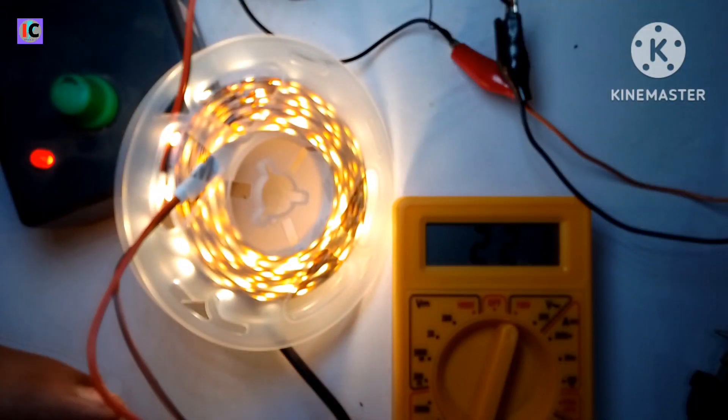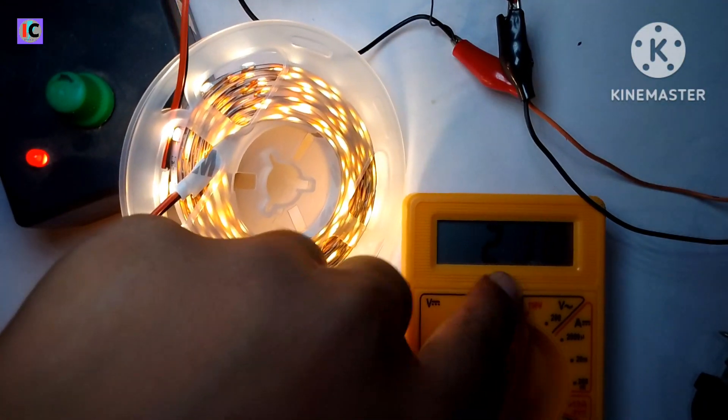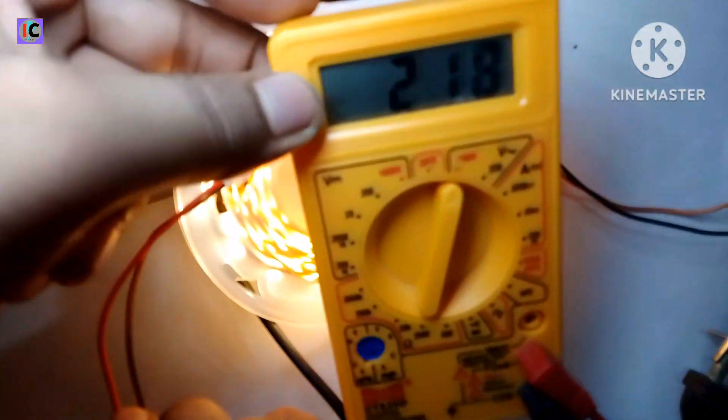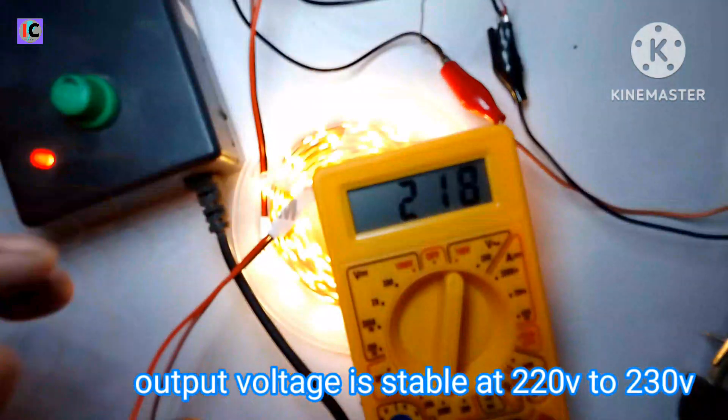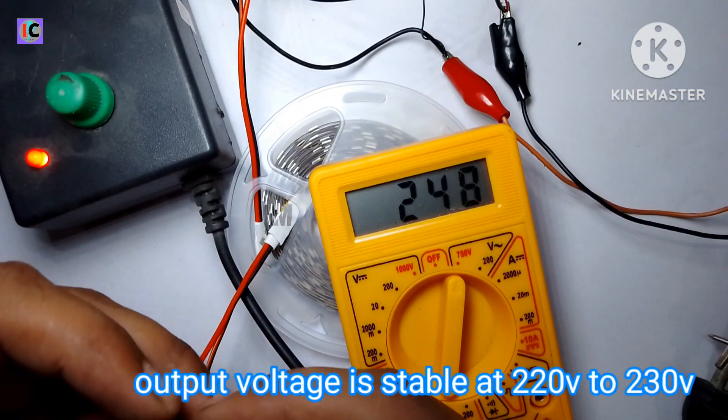The SMPS is 5 ampere, and the current consumption by this LED strip is about 2 to 2.5 amperes, which is also working very well.